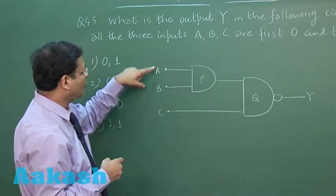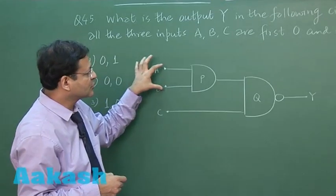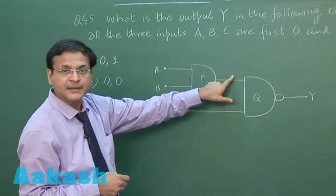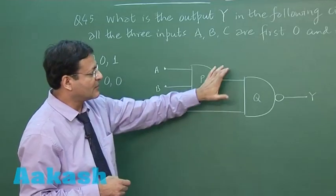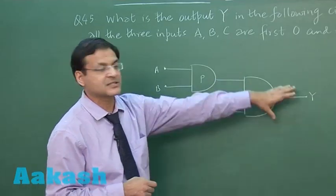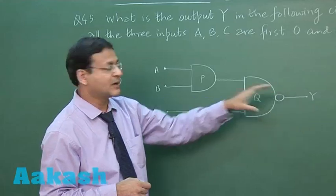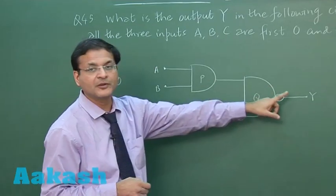So first let us suppose all the 3 inputs are 0. When 00 is going here the output will be 0 here and this 0 is going here. So 0 multiplied by 0 this is 0 and reversed. So that makes it 1. So when all the 3 inputs are 0 the output will be 1.